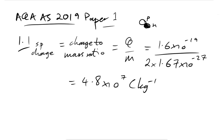Even if you can't remember what specific charge is — it's probably in your formula sheet — you're given the unit. Units are your friends. Coulombs per kilogram tells you it's going to be calculated as charge divided by mass.